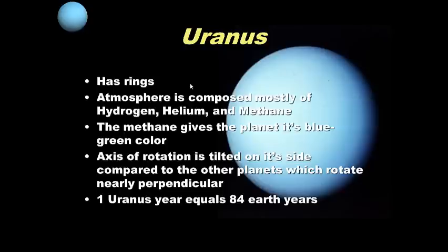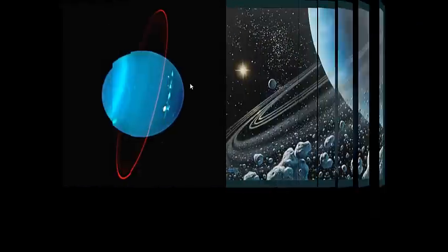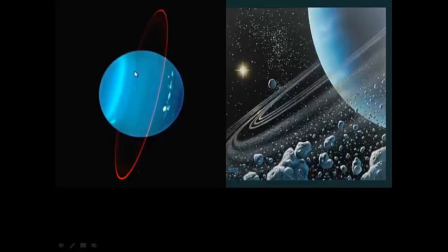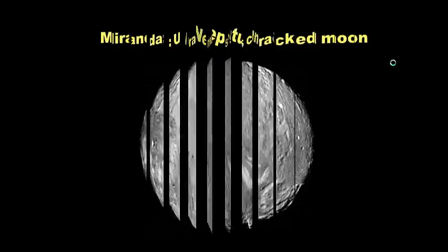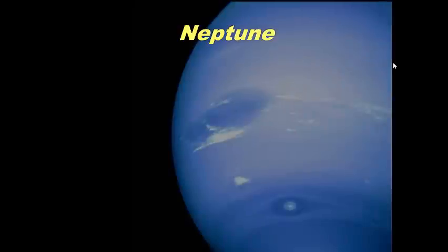One Uranus year is 84 Earth years, so it takes Uranus 84 Earth years to go around the Sun once. These images show that Uranus spins tilted on its side — not perpendicular up and down, but side to side. Here is an artist's picture of what the Sun might look like from way out where Uranus lies. Here is Uranus's cracked moon called Miranda.